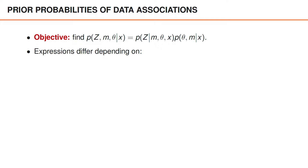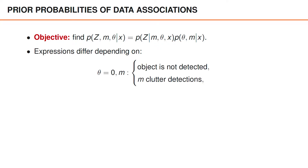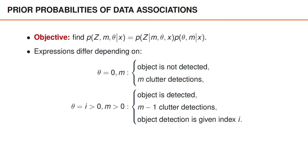The expressions for these two factors take different forms depending on theta and m. The first possibility is that theta is equal to zero, and that we have observed m detections. This event tells us that the object is undetected, and that all m detections are clutter. The second possibility is that theta takes some value i greater than zero, and that we have observed m detections, where m needs to be at least one, since the object is detected.